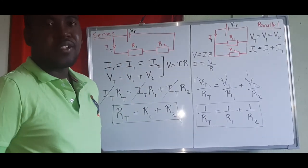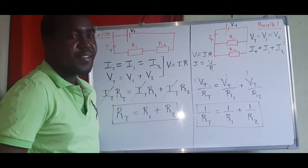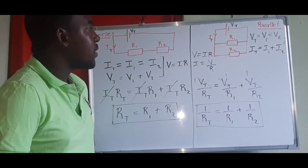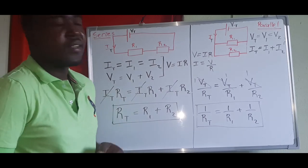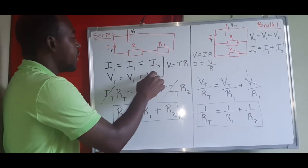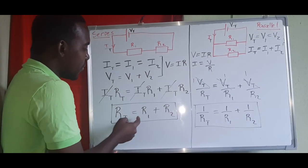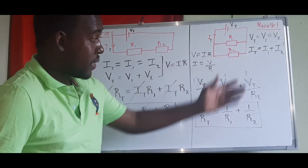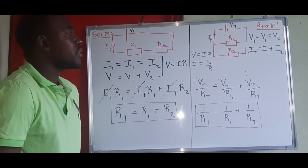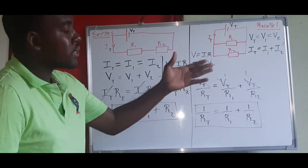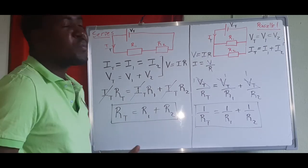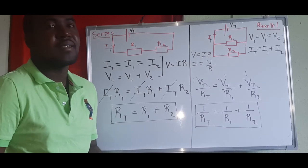That's how we derive the total resistance equation for a parallel circuit. The same process applies no matter how many resistors there are — just add more terms. If there were three resistors, it would be 1/R_t equals 1/R1 plus 1/R2 plus 1/R3. Thank you very much for watching, hope you understood something today, and see you next time.